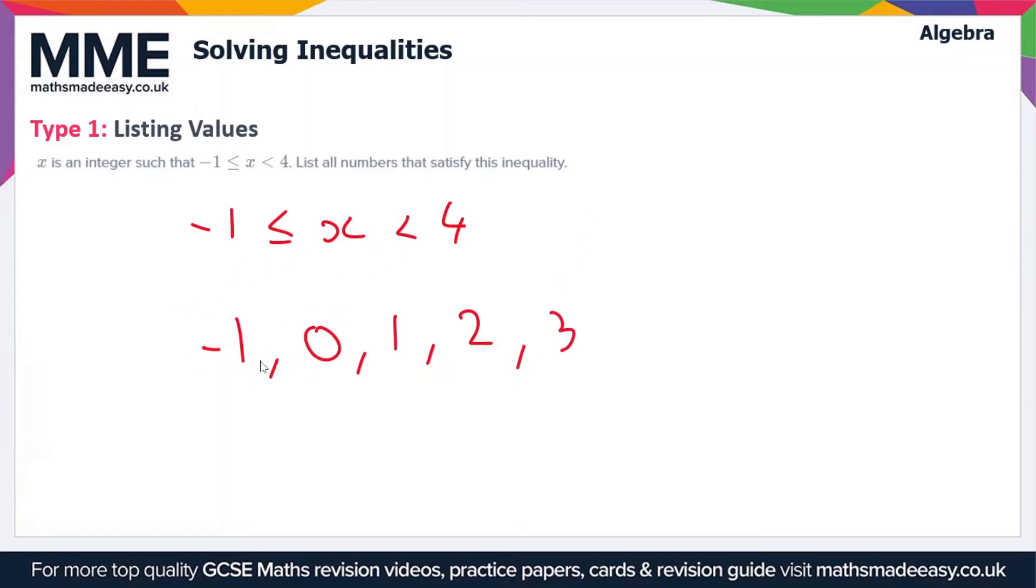As I say, we can include the value of minus one because this is an inclusive inequality, but we can't include the value of four because this is a strict inequality.